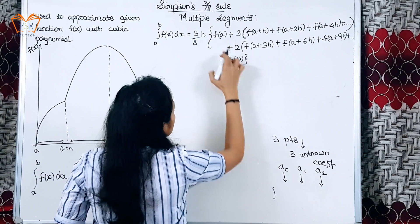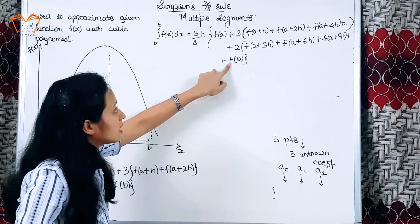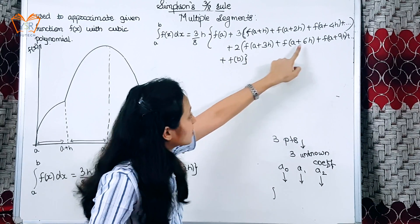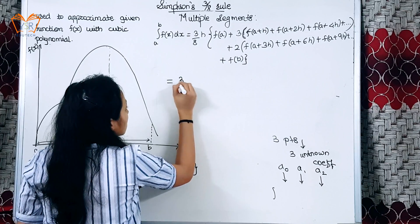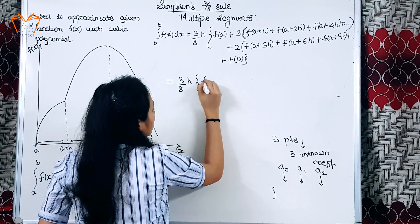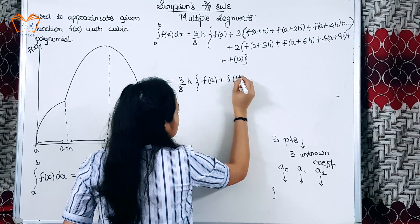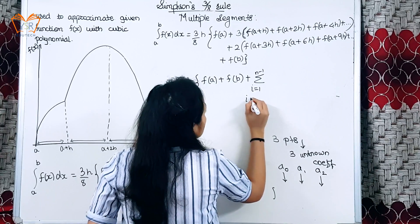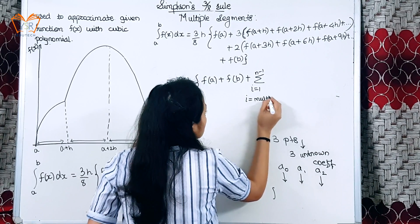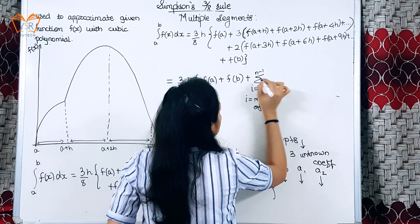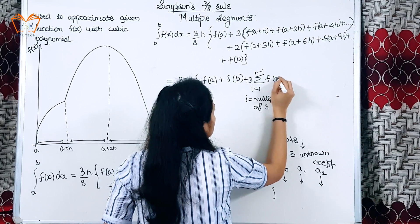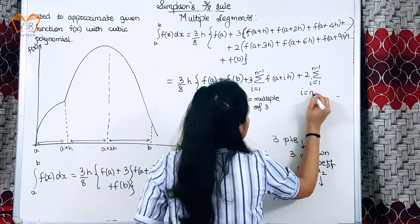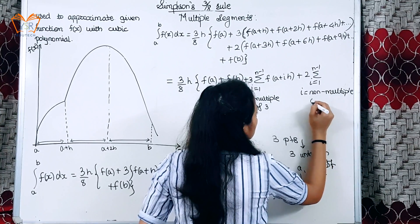It can be concluded that the first and last terms are not multiplied by any constant. 3 is multiplied to the non-multiples of 3, and 2 is multiplied to the multiples of 3. So we can write it as: f(a) + f(b) + summation i equals 1 to n-1, where if i is a multiple of 3, f(a+ih)...